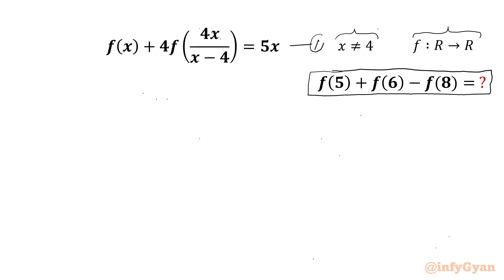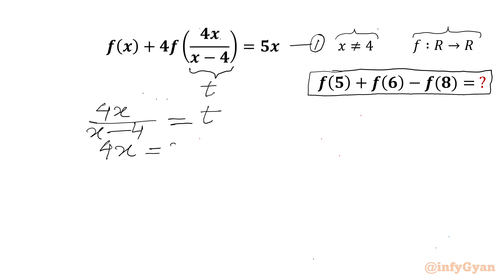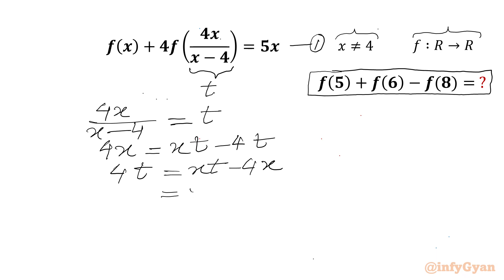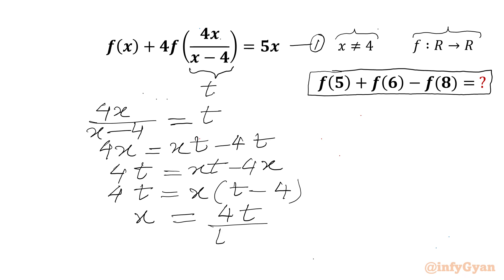I will consider the given equation as equation number 1. Now I will try to find f(x). Let us consider 4x/(x−4) = t. So 4x = xt − 4t, which gives us 4t = x(t−4). Therefore x in terms of t is 4t/(t−4).